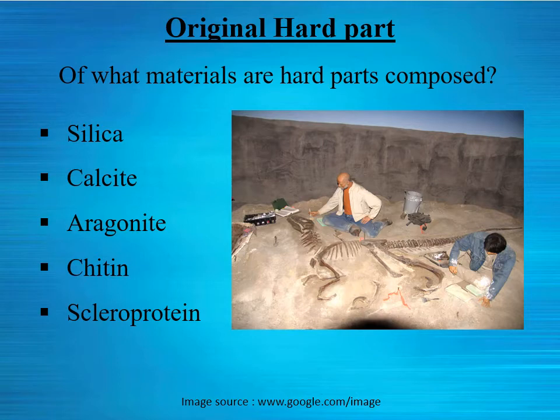First: original hard parts. Hard parts means the hard exo- or endoskeletons of organisms. For most invertebrate groups, the hard part is their exoskeleton, whereas many other invertebrate organisms have hard parts as internal skeletons. Most vertebrates also have their hard parts as internal skeletons — that is, bones or other representative structures.